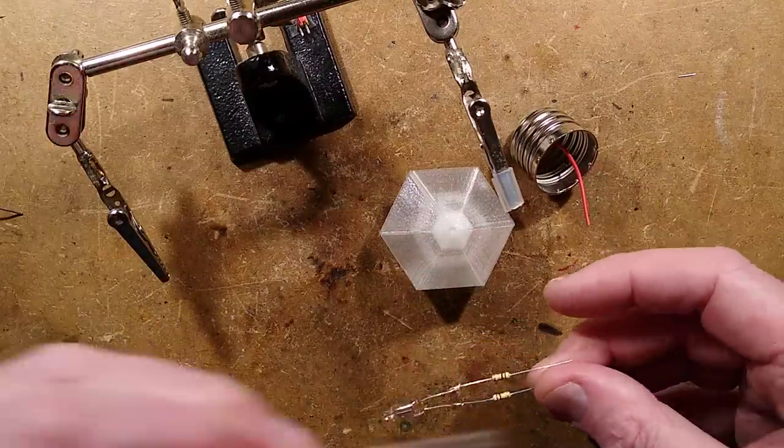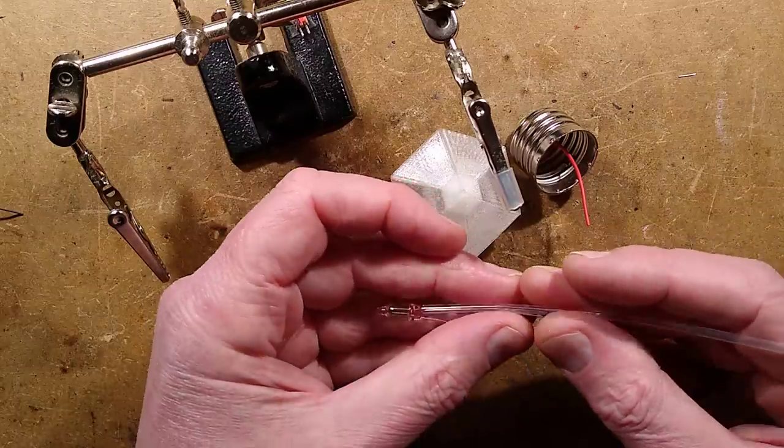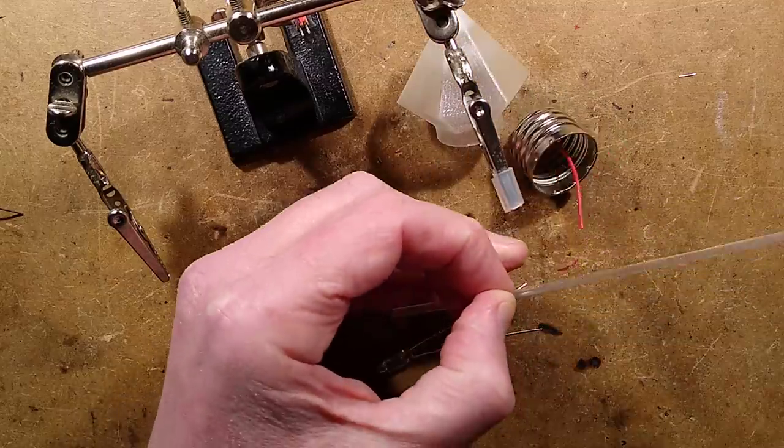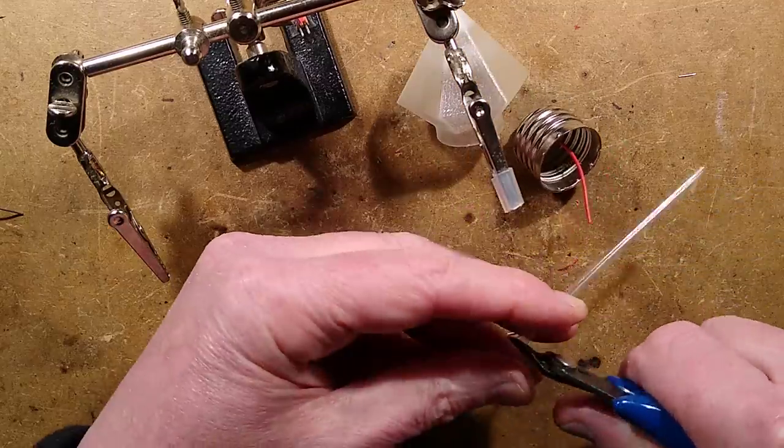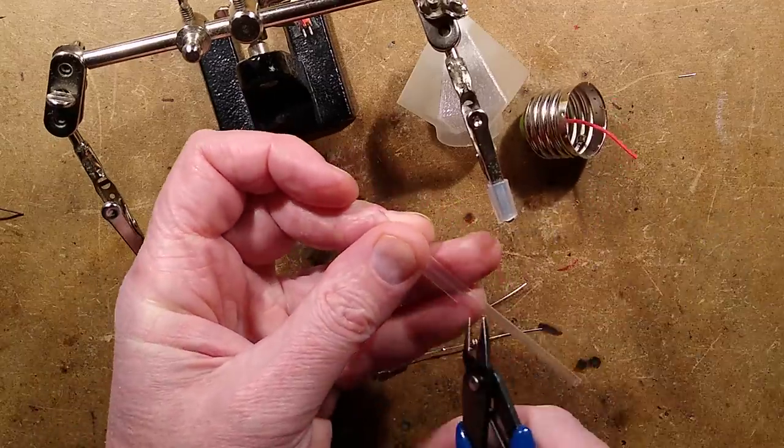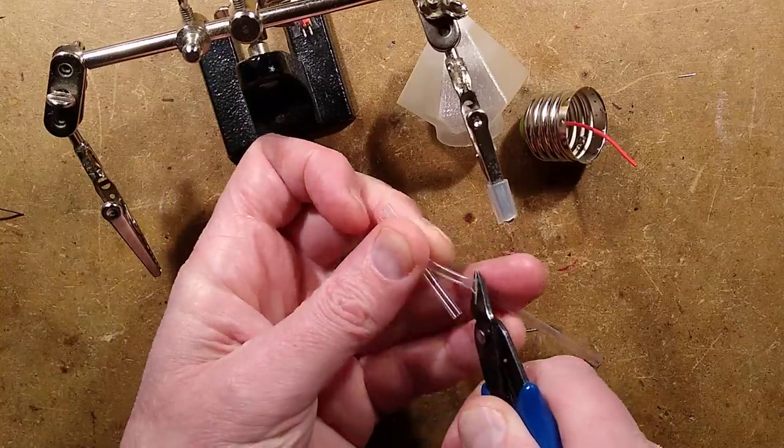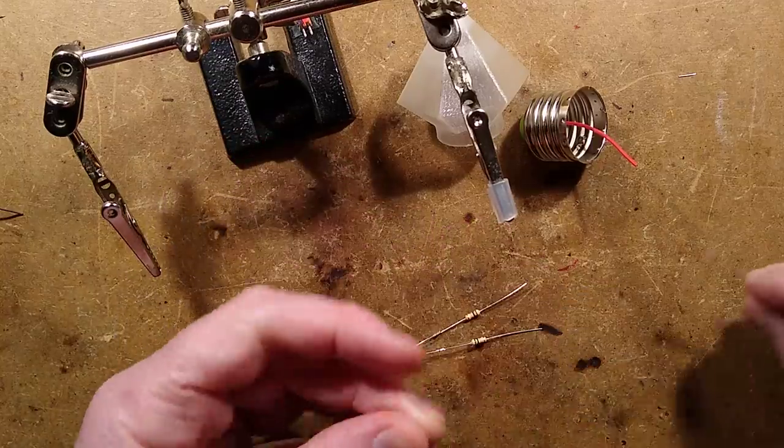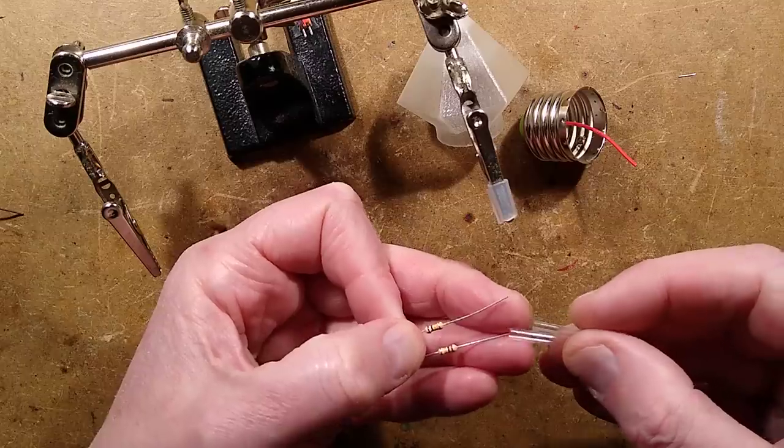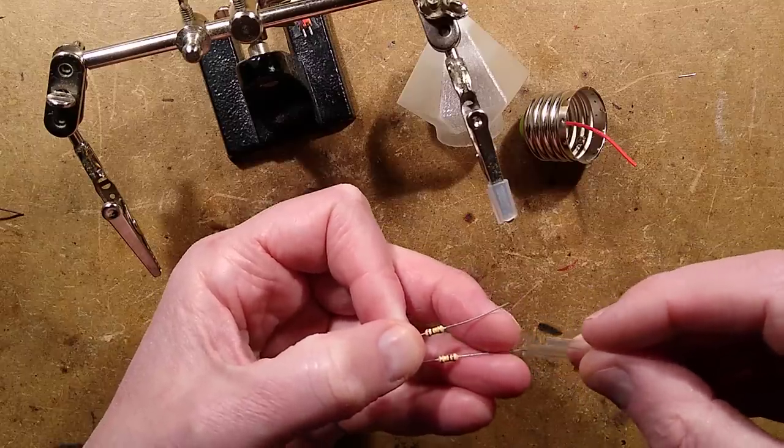So I'm going to put some heat shrink sleeving over this now to cover up to about there. I shall cut two identical pieces of sleeving and just make them both identical even though they're not going to the same place. If you're making one of these with a bayonet cap lamp holder, you would just leave them both the identical length and they'd both go out at the same place at the bottom to one contact each.